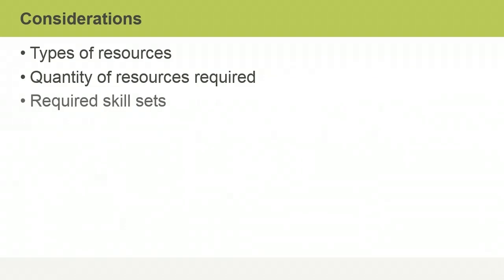The manager needs to determine the skill sets that are required to perform each activity so appropriate human resources can be identified. The level of skill required will have an important impact on the budget. For example, if the project requires technical drawings to be compiled, does this require an architect or is it something that a technical draftsperson can do?